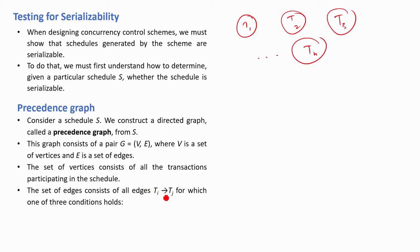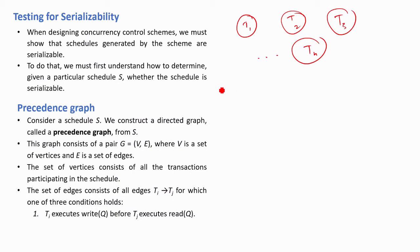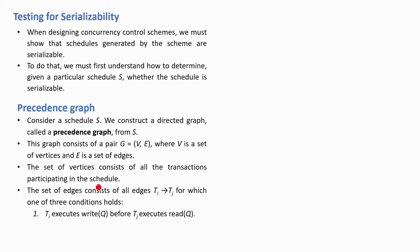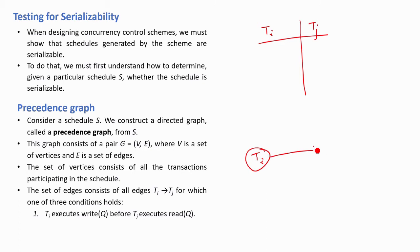The set of edges consists of all edges from ti to tj for which one of three conditions holds. If at least one of the three conditions is satisfied, we have an edge between ti and tj directed from ti to tj. The first condition is: ti executes write Q before tj executes read Q — that is, write Q appears before read Q.